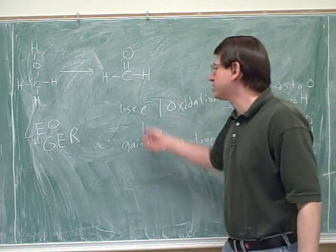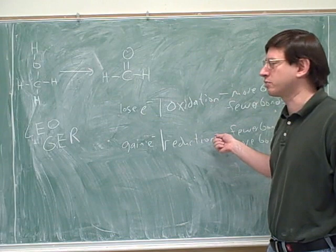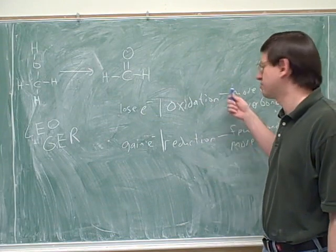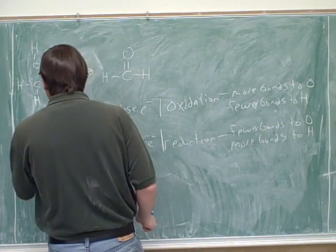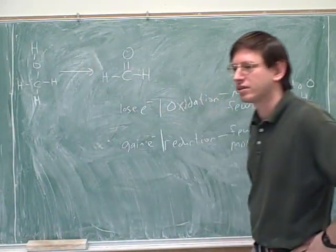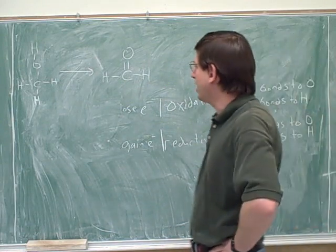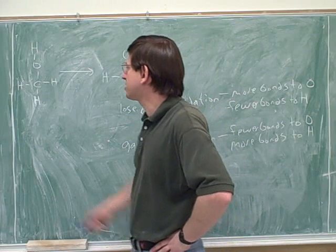Okay, you should know this. You might actually need this occasionally in ochem, but when in doubt, this is the key definition to focus on because we're usually not really counting the electrons here so much, but it's easy to see where the oxygens and the hydrogens are. But LEO the lion goes GER is definitely a good mnemonic there.